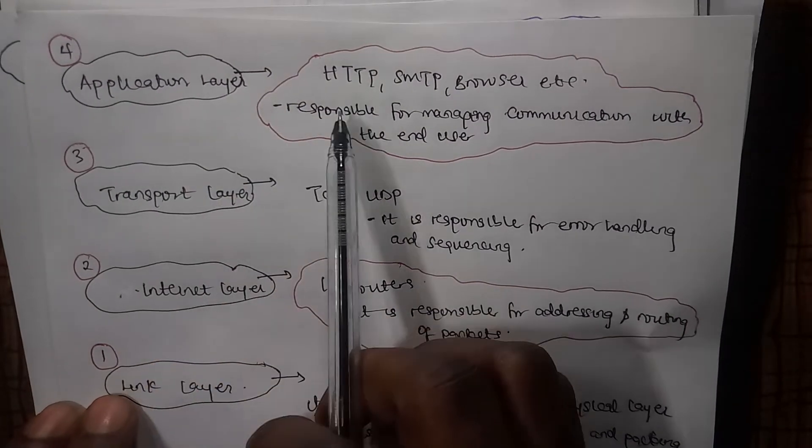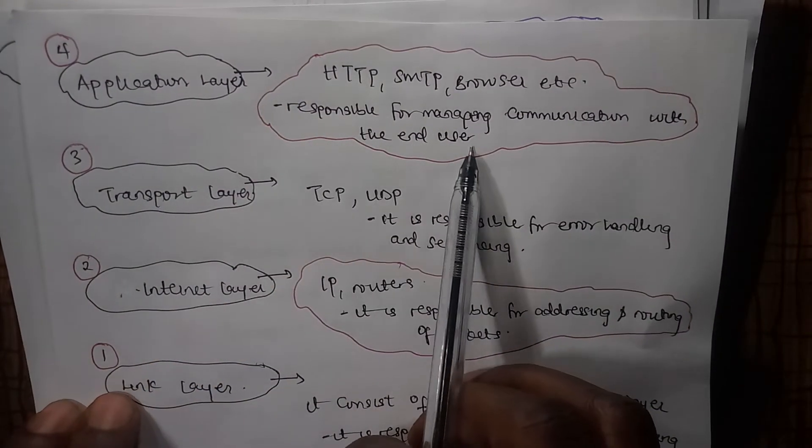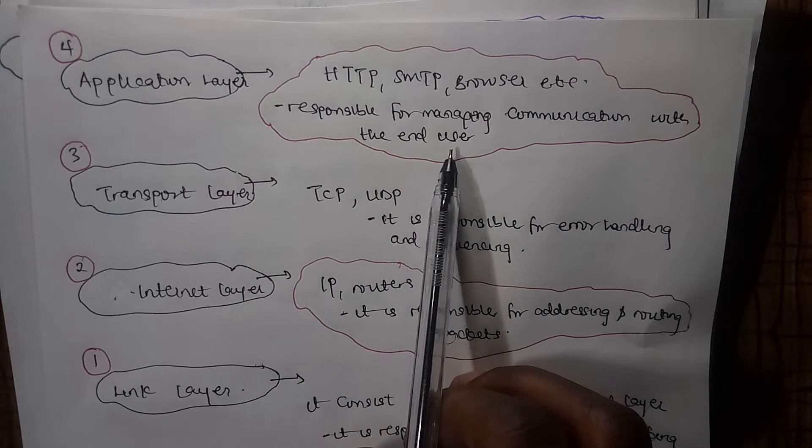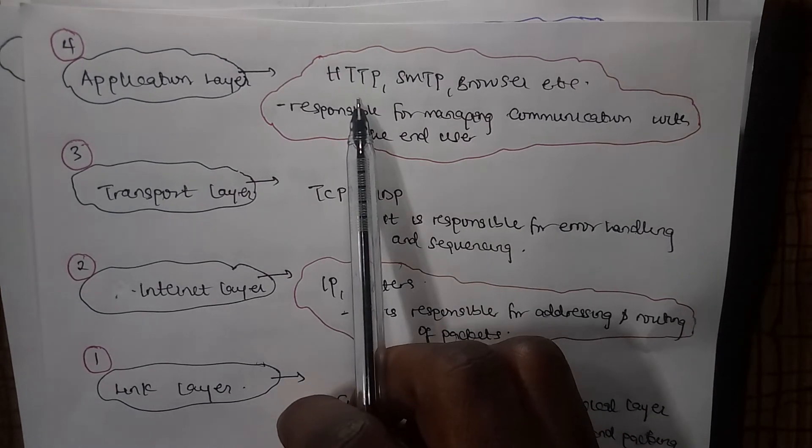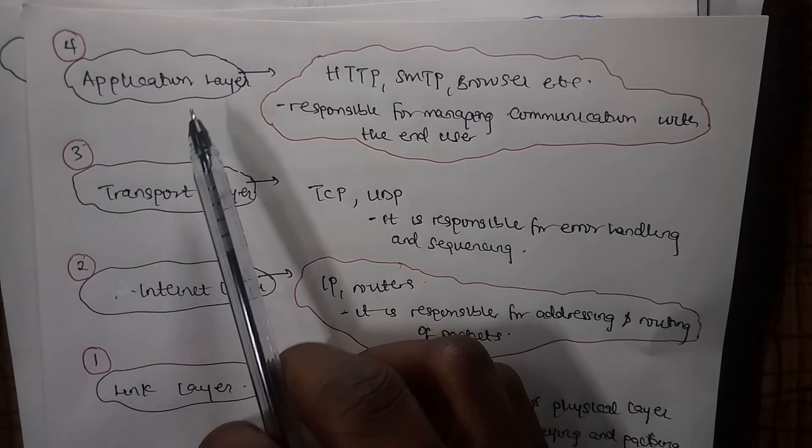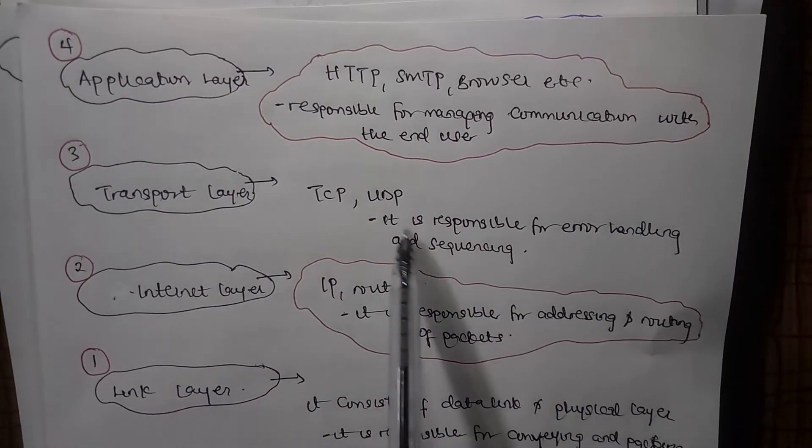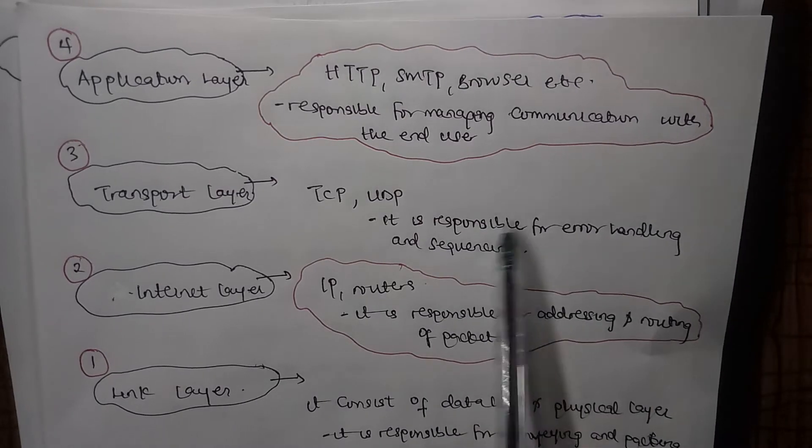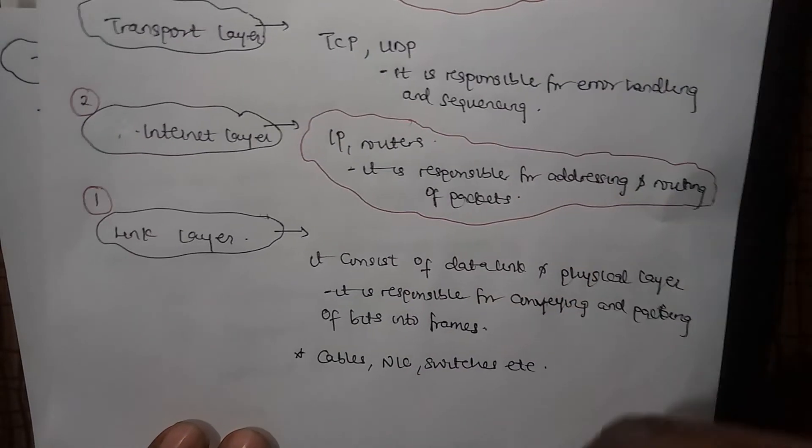Looking at this, the application layer is responsible for managing communication with the end user. This is like the browser, Mozilla, Gmail application, HTTP for accessing the internet. That's the application layer, the upper layer. We have the transport layer, which is responsible for error handling.